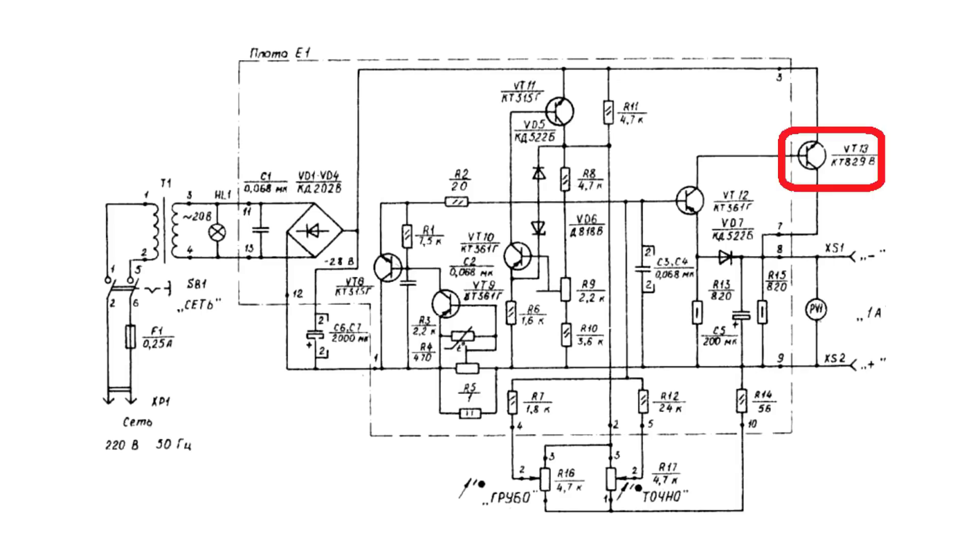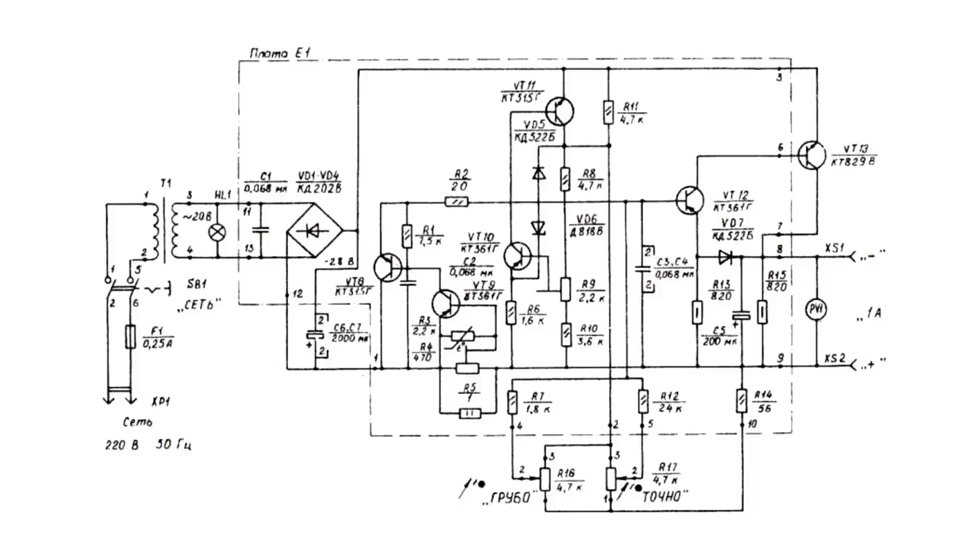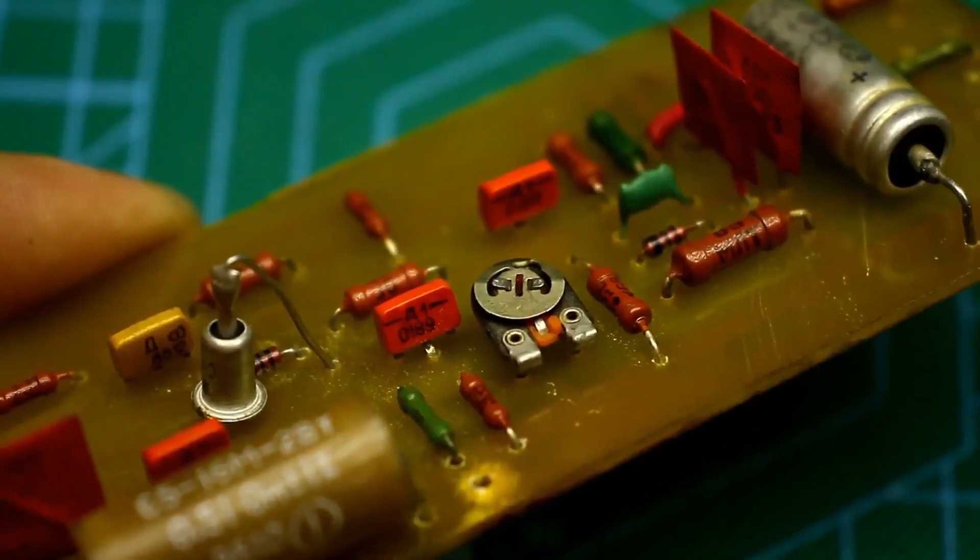But the power of the circuit can be increased by replacing the power transistor and reducing the resistance of the current sensor. The second trimmer resistor will allow setting the upper limit of the output voltage. It should be noted that the output voltage of the circuit is always lower than the input voltage, in this case by about 2 to 3 volts.